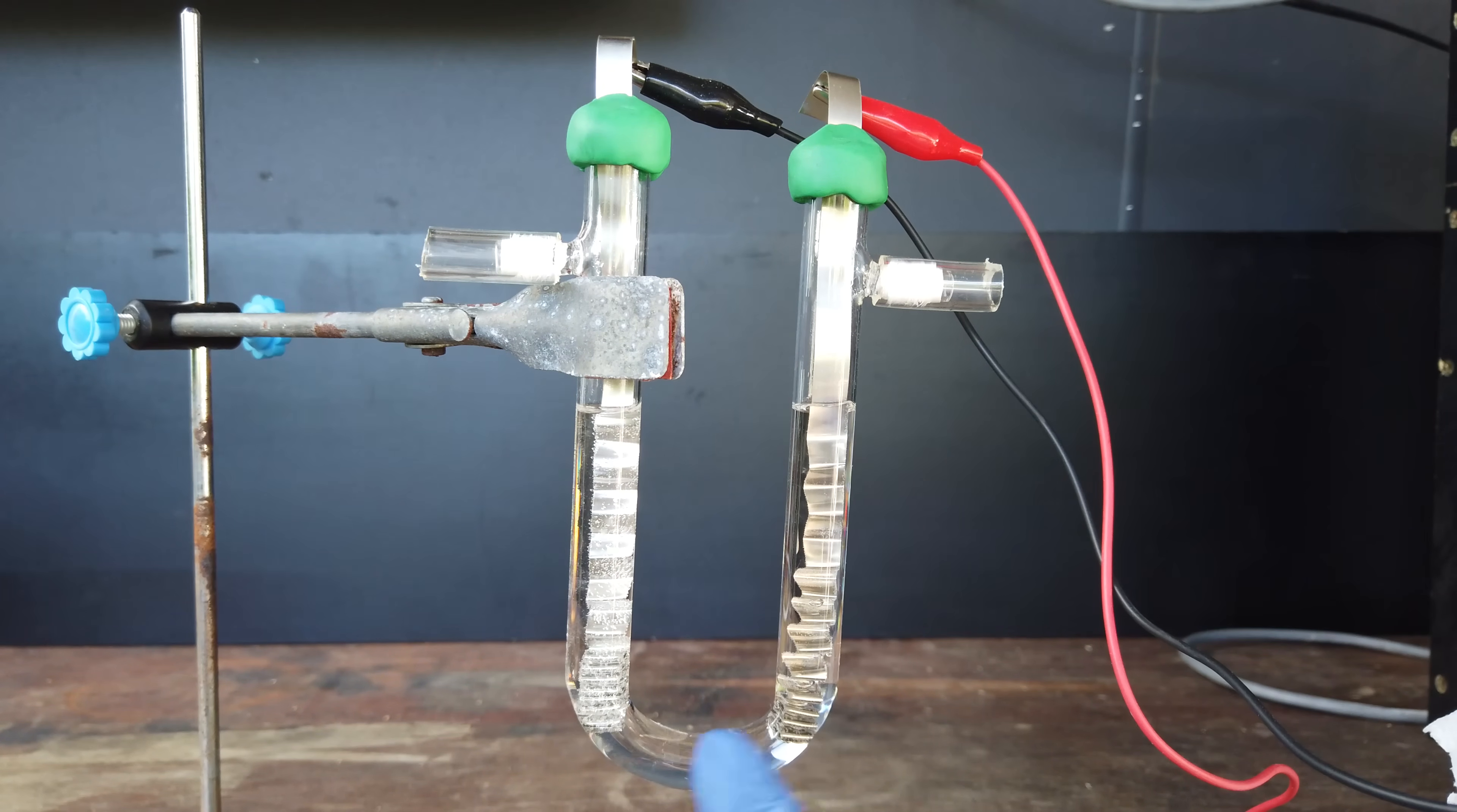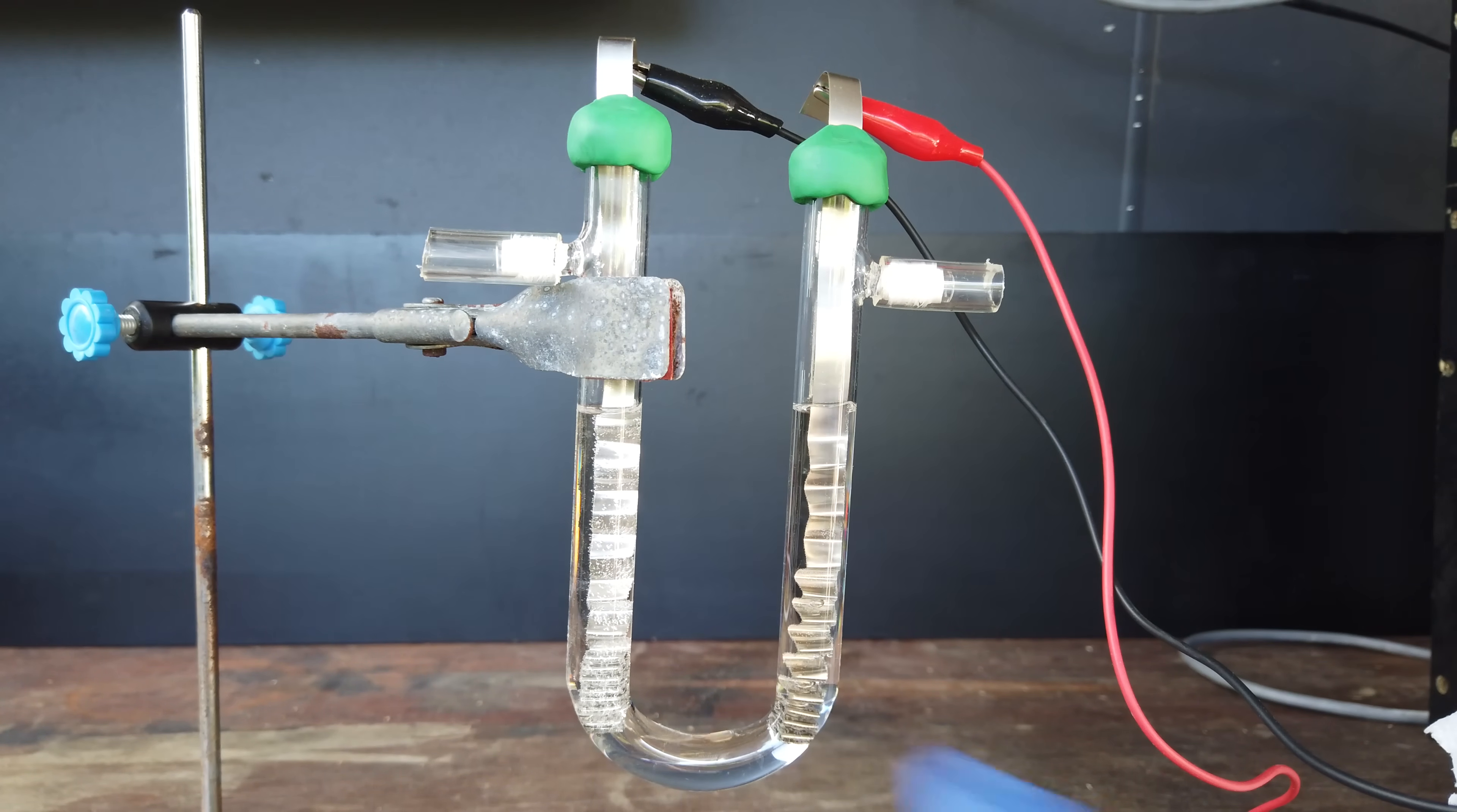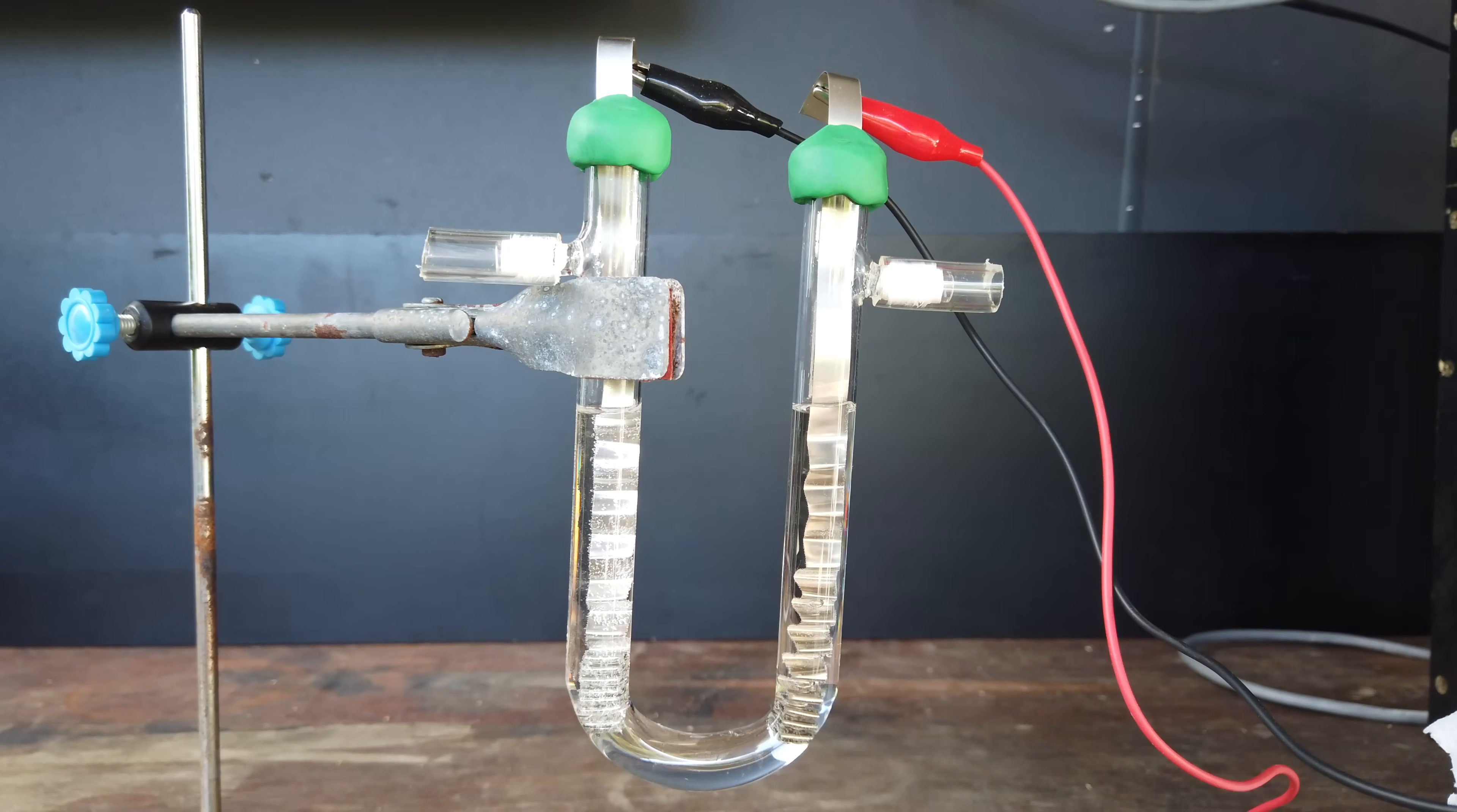As you can see, at this 1.5 volts, we are generating hydrogen off the cathode. You can see that bubbling off the electrode rather quickly there. We have about 6 milliamps flowing through the cell right now. So that's not much gas production, but you can definitely see it there.